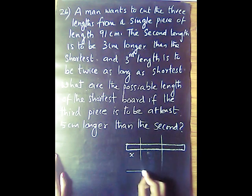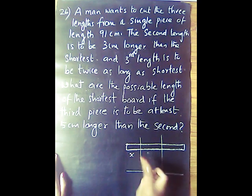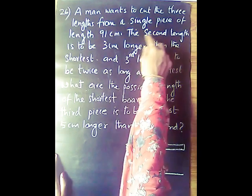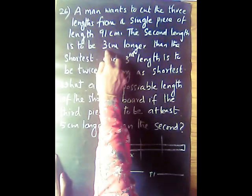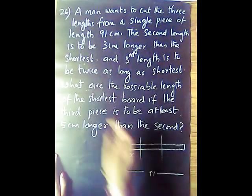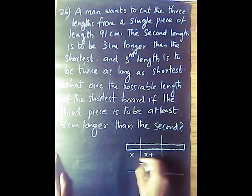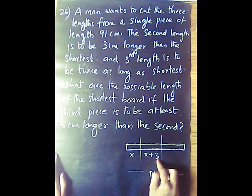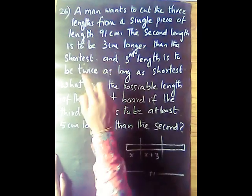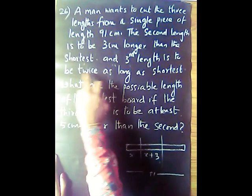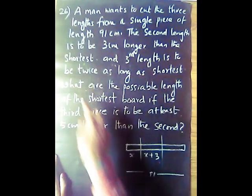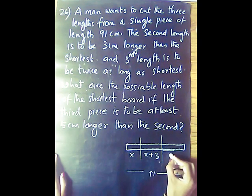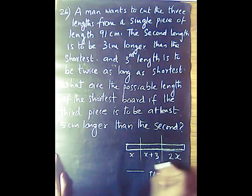Let the shortest length be x. The second length is x plus 3, which is 3 cm longer than the shortest. The third length is 2x, which is twice as long as the shortest.